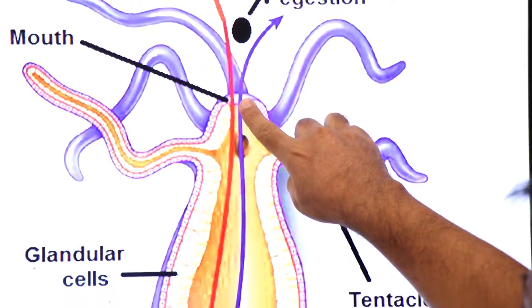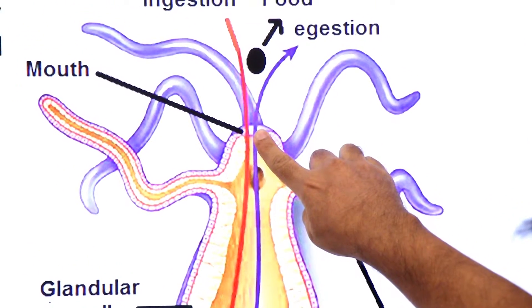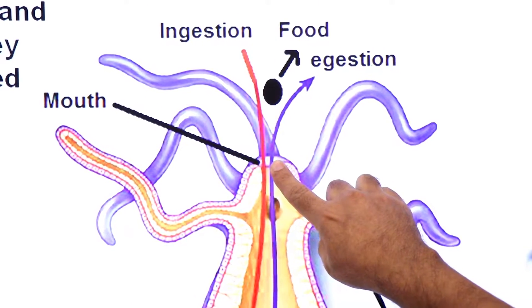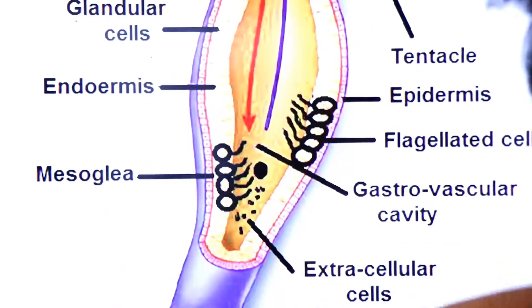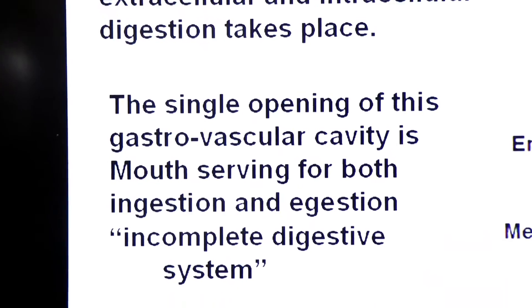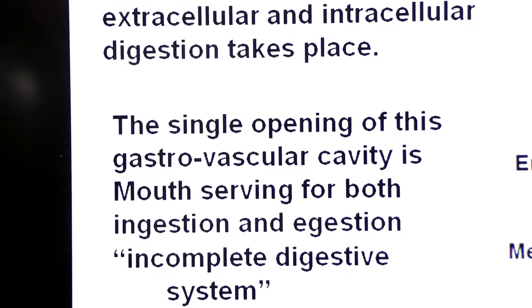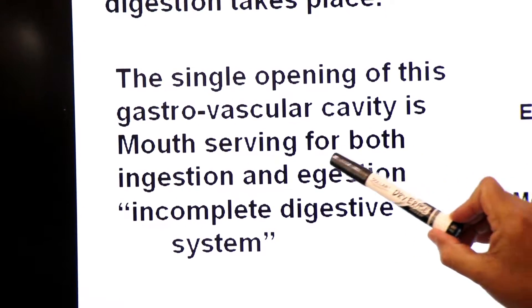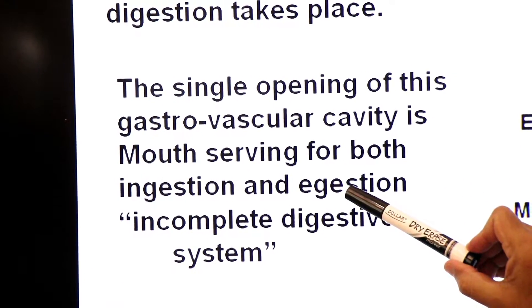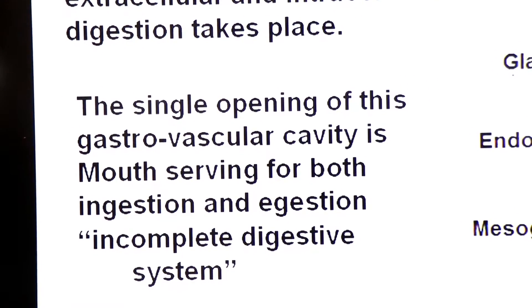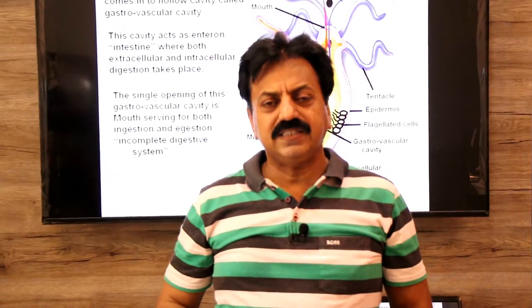This gastrovascular cavity has only a single opening — the mouth — which performs both functions: ingestion and egestion. Because of this single opening, this digestive system is called an incomplete digestive system. The single opening of the gastrovascular cavity serves for both ingestion and egestion.